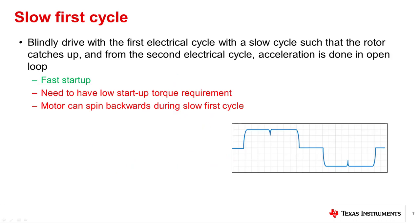Slow first cycle is similar to Align except that instead of applying a stationary Align vector, the system slowly moves the Align vector for one electrical cycle throughout the alignment process. One main advantage of this method is the ability to achieve faster startup since not only will the motor position be determined, the rotor will already be moving when the system begins acceleration. However, the motor being driven needs to have a low startup torque requirement in order for the rotor to properly catch up with the rotating vector, and the technique still doesn't eliminate the possibility of the motor spinning backwards.